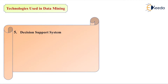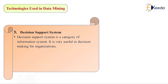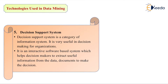Data warehousing is used for online analytical processing. Next is the decision support system. This is very important in final analyzing. A decision support system is a category of information system. It is useful in decision making for an organization — it is an interactive software-based system which helps a decision maker extract useful information from data and documents to make decisions.